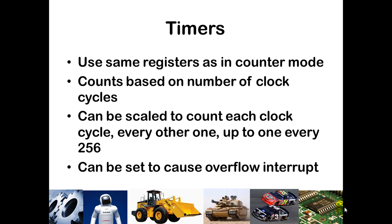Timers work basically the same way, except instead of waiting for an external pin's input to come into the PIC, you're going to use the clock cycles, and it'll count based on how many clock cycles have elapsed. You can scale down from once every cycle all the way up to once every 256 clock cycles. If you want your timer to run slower, you increase the number of clock cycles per count; if you want it faster, you decrease that. You can also set up an interrupt so that when it overflows, it will cause an interrupt to be executed and the interrupt service routine will handle that.